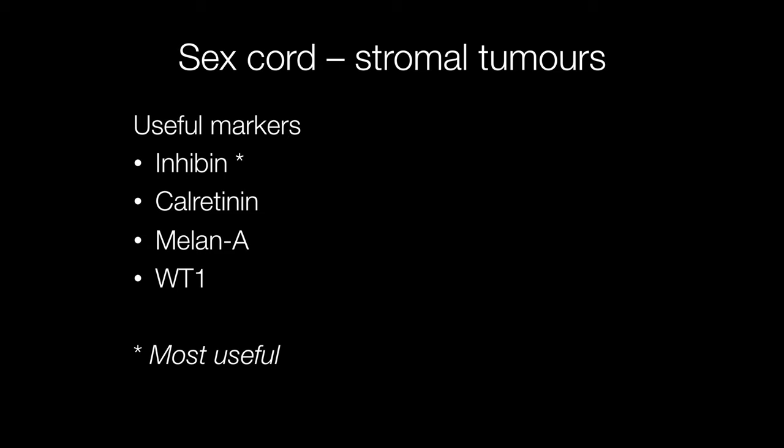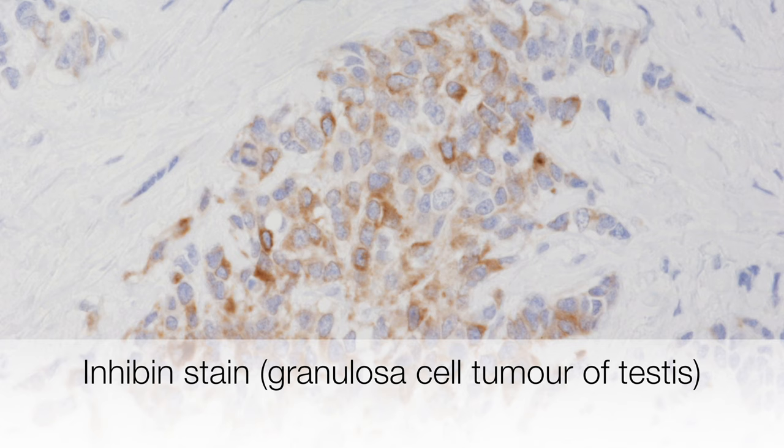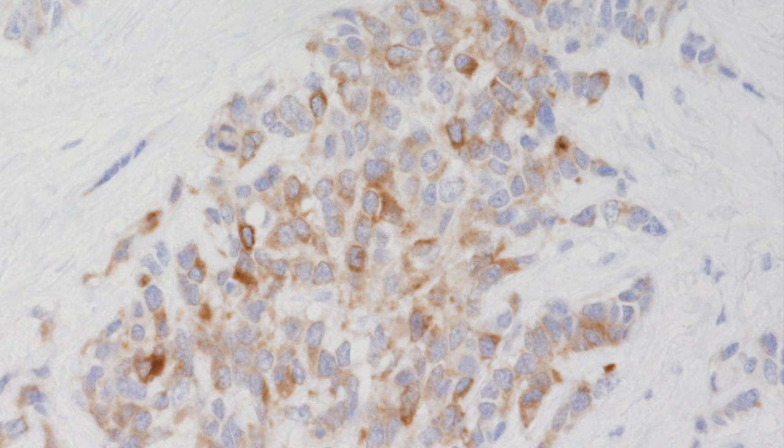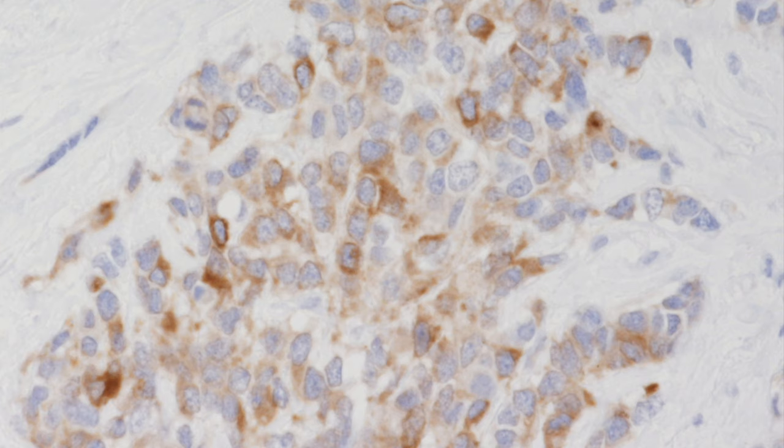For illustration purposes, this is an example of the use of inhibin for diagnosing a sex cord stromal tumour. This tumour turned out to be a granulosa cell tumour of the testis. The areas of brown staining indicate positivity for inhibin.